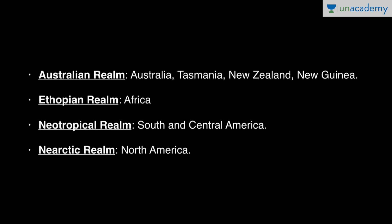The Australian realm covers Australia, Tasmania, New Zealand, and New Guinea. The Ethiopian realm covers Africa. The Neotropical realm covers South and Central America. And the Nearctic realm is North America.